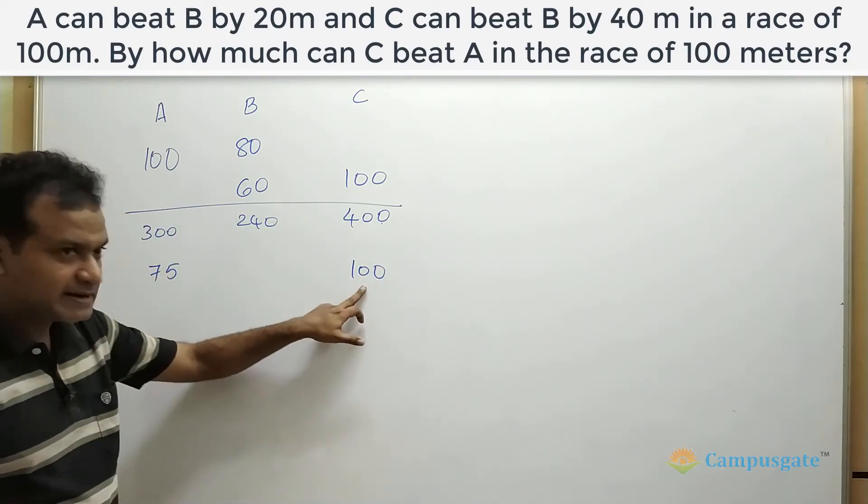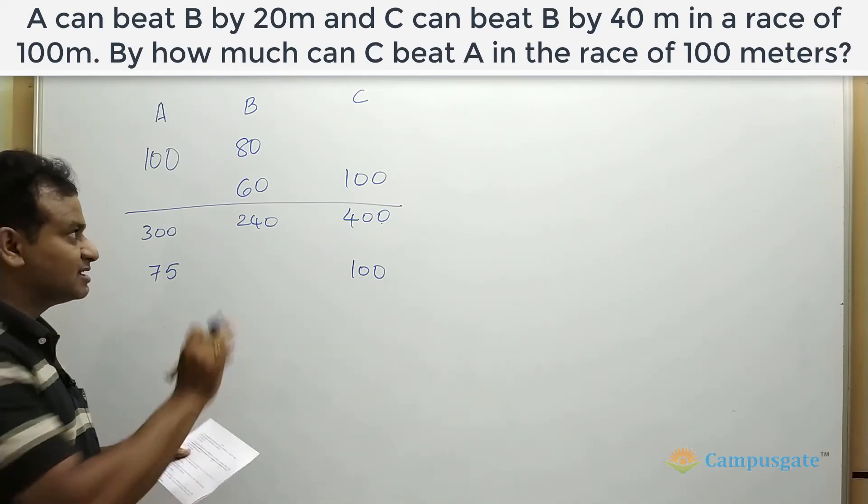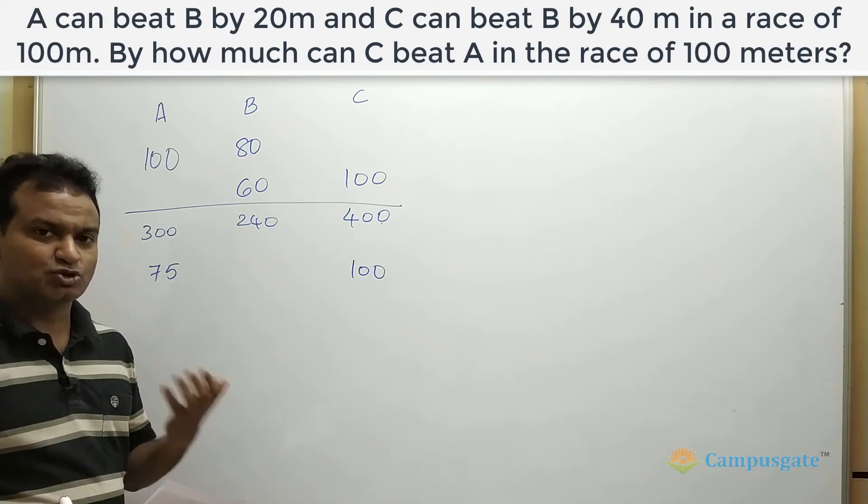That means in a 100 meter race, by the time C completes 100 meters, A covers only 75 meters. That means C beats A by 25 meters. That should be the answer.